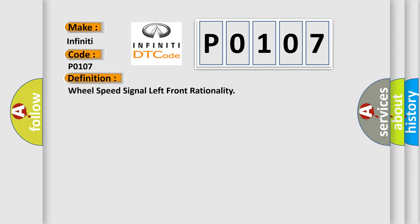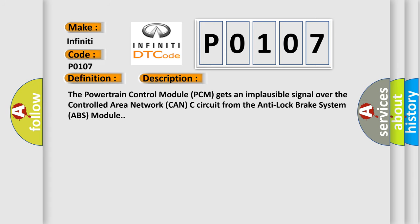And now this is a short description of this DTC code. The powertrain control module PCM gets an implausible signal over the controlled area network CAN-C circuit from the anti-lock brake system ABS module.